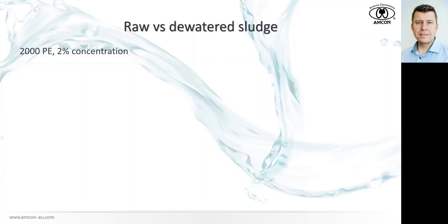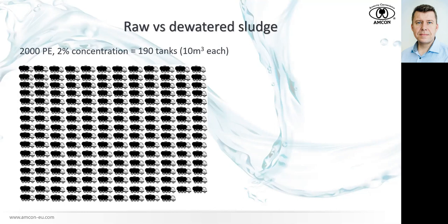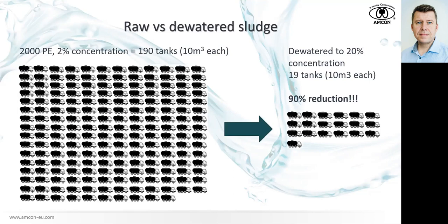Raw versus dewatered sludge. 2,000 population equivalents — a small village or really small town — at 2% concentration will produce something around 200 tanker trucks, 10 cubic meters each. If we manage to dewater the sludge and increase concentration from 2% to 20%, the reduction is around 90%: instead of 190 trucks, we have 19. Of course, 20% sludge is not liquid anymore — it's already in a solid state — so this is just for easy comparison.